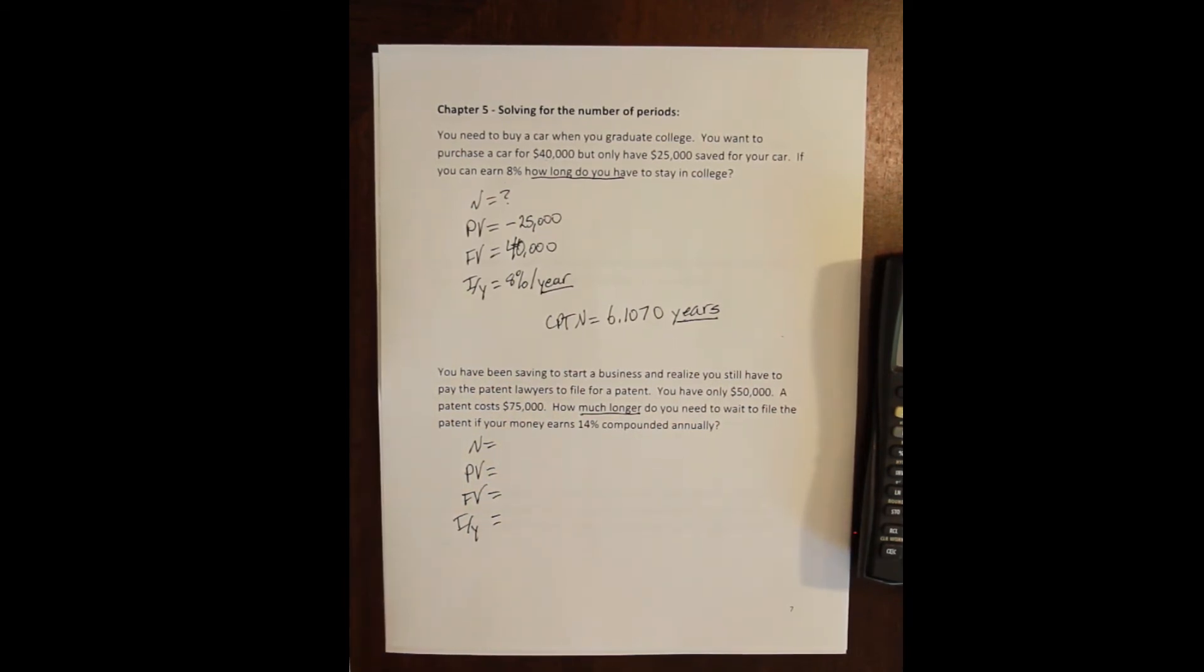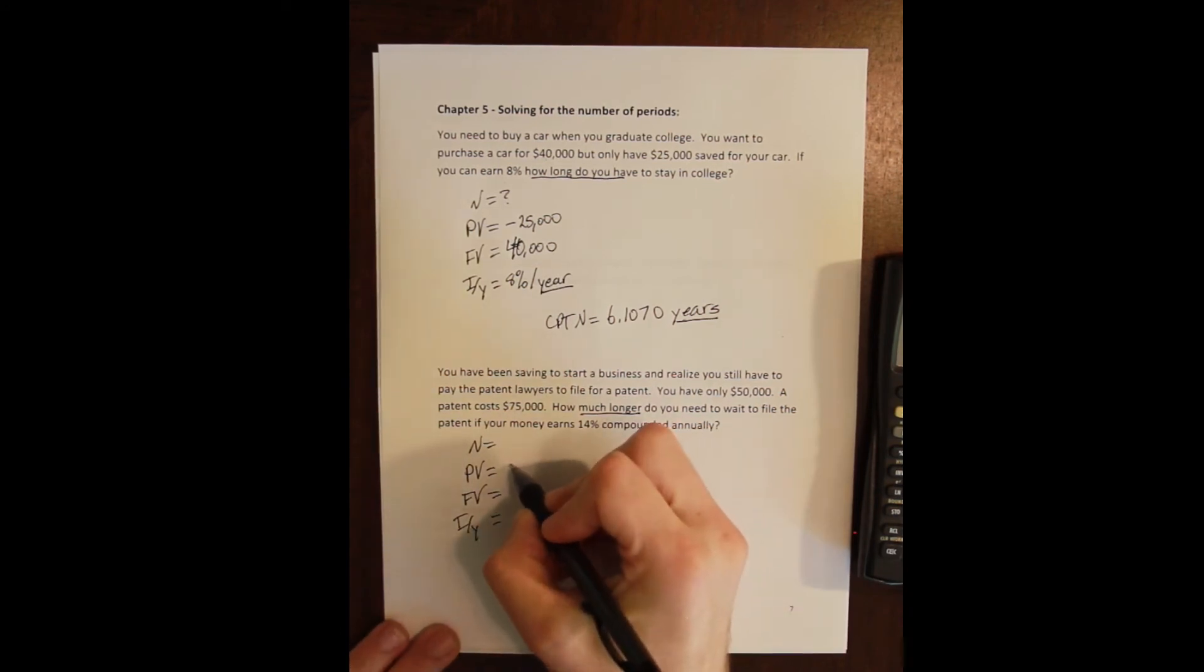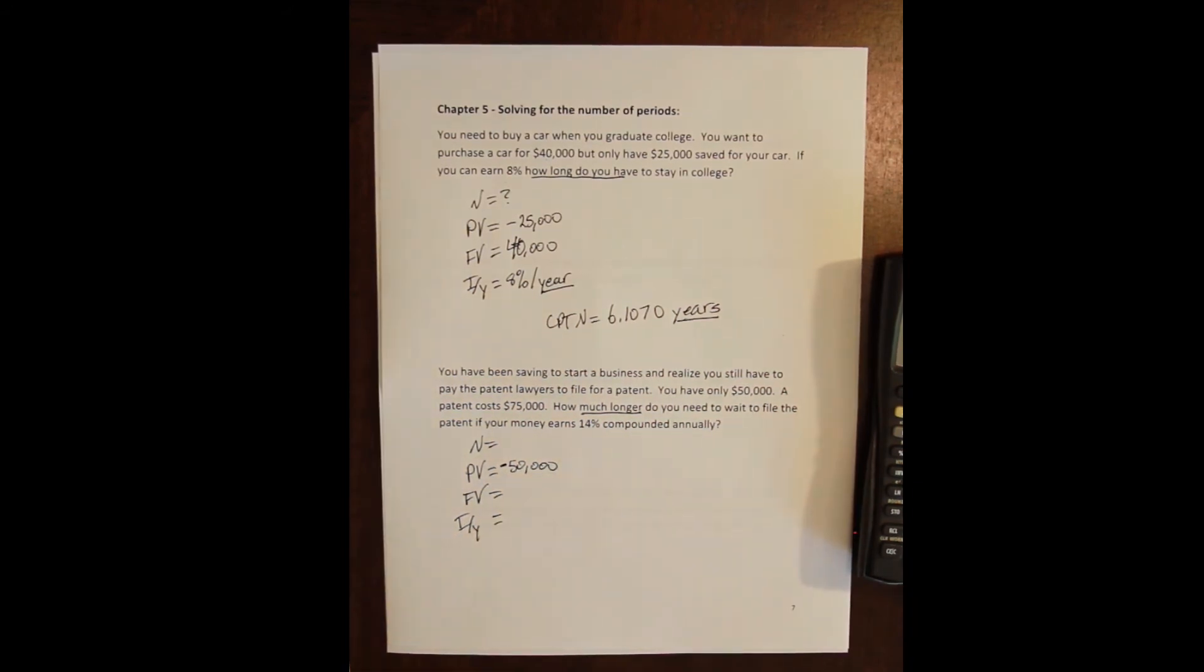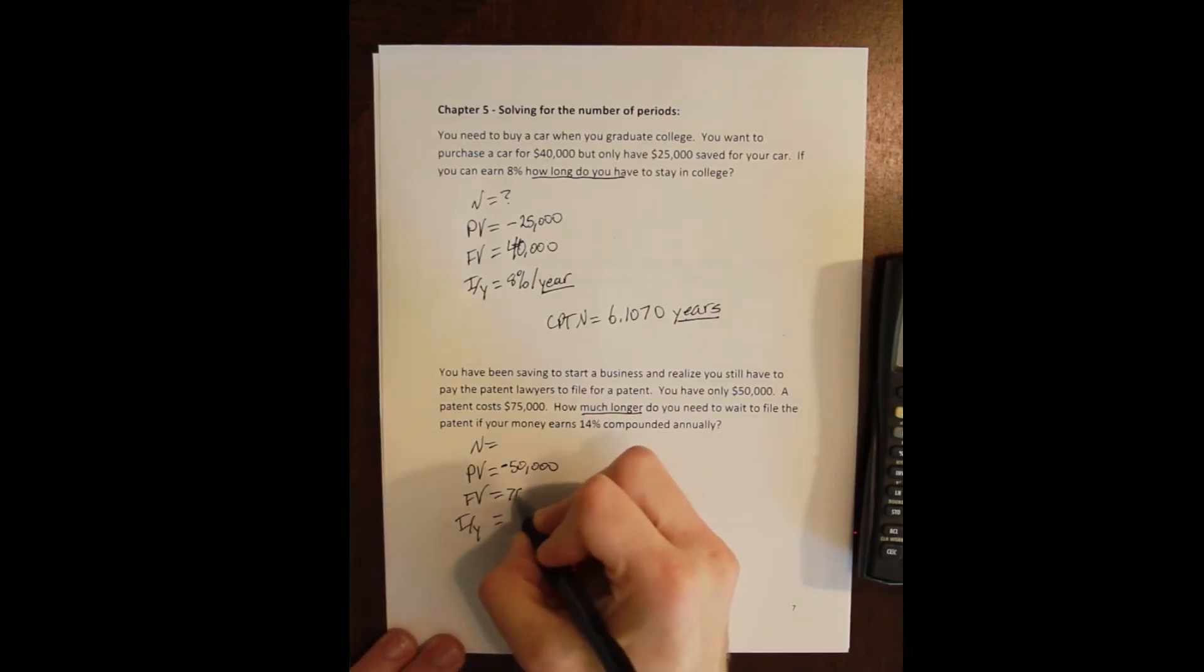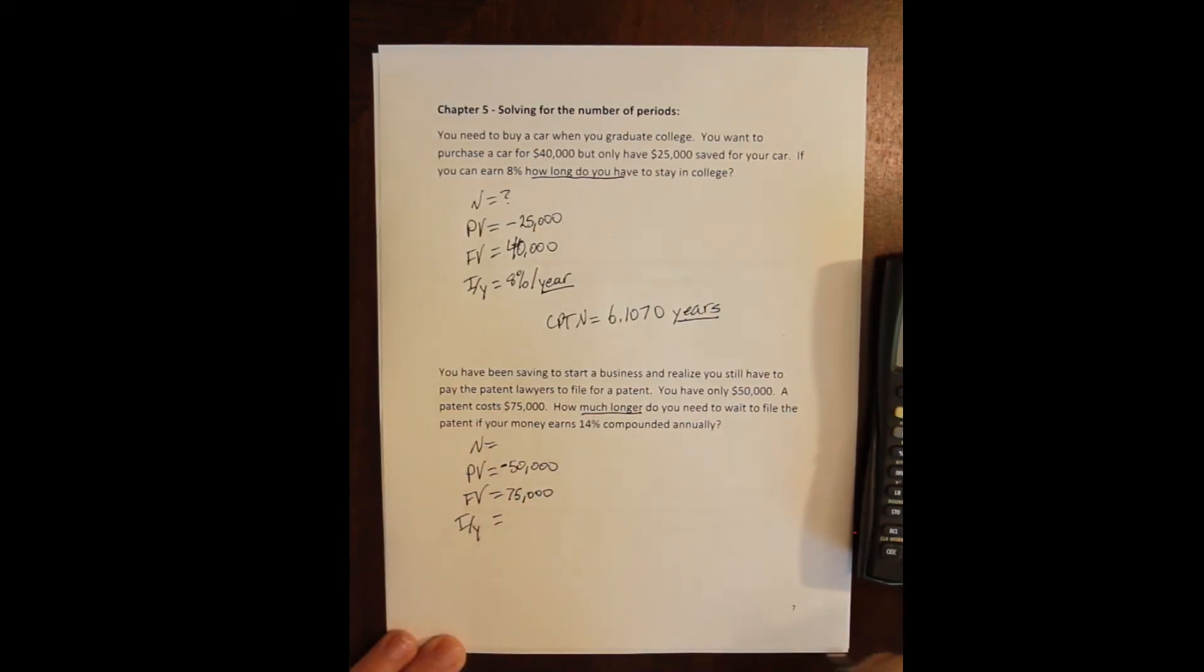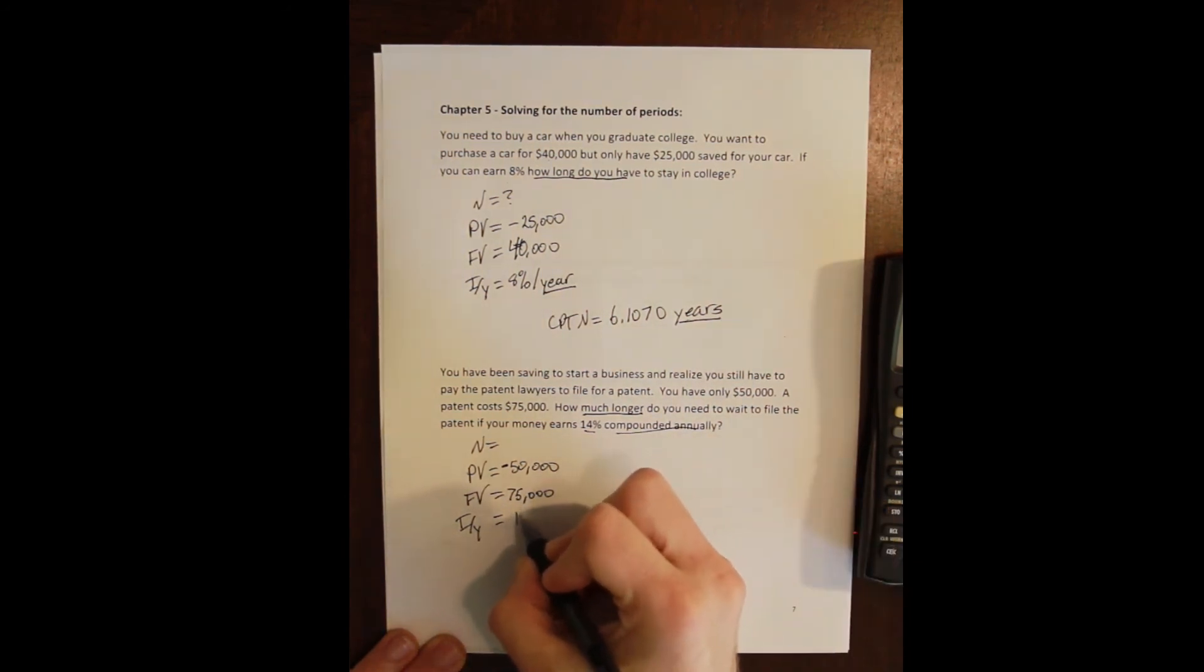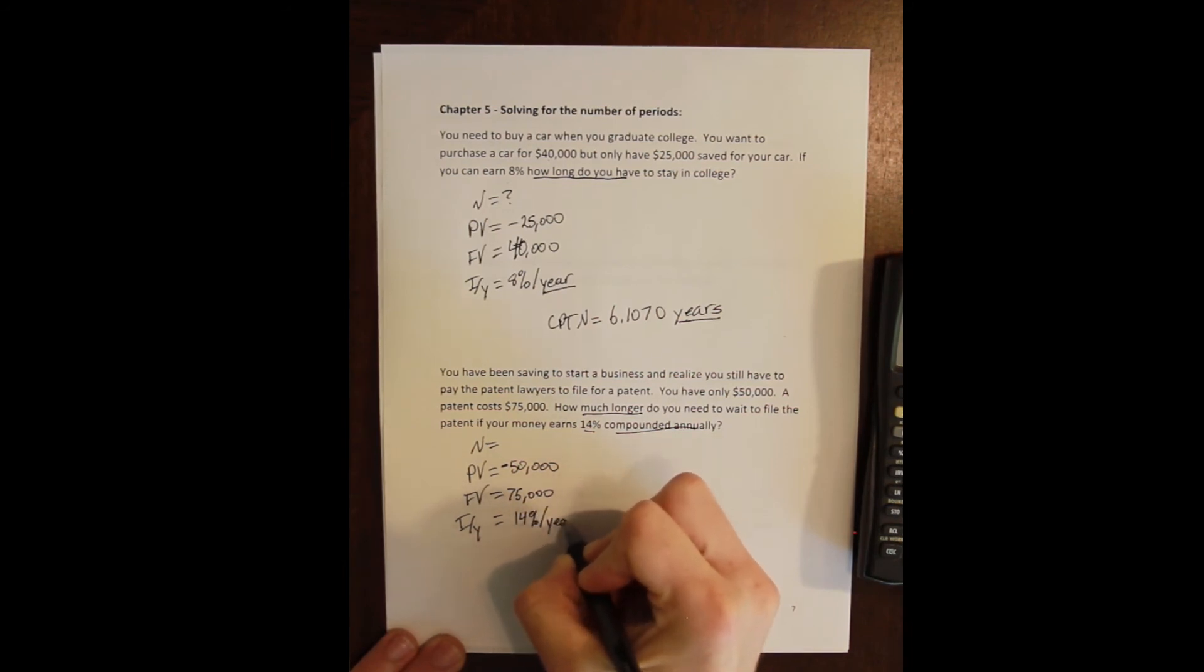Again, we have a problem with an investment here. The only way we turn 50,000 into 75,000 is by investing it into something. So our present value is the money we start with, $50,000, but that's a cash outflow because we are beginning a new investment with it. We want that money to turn into 75,000, which is our future value. And we're going to earn 14% and that's compounded annually. So we're going to earn 14% per year.